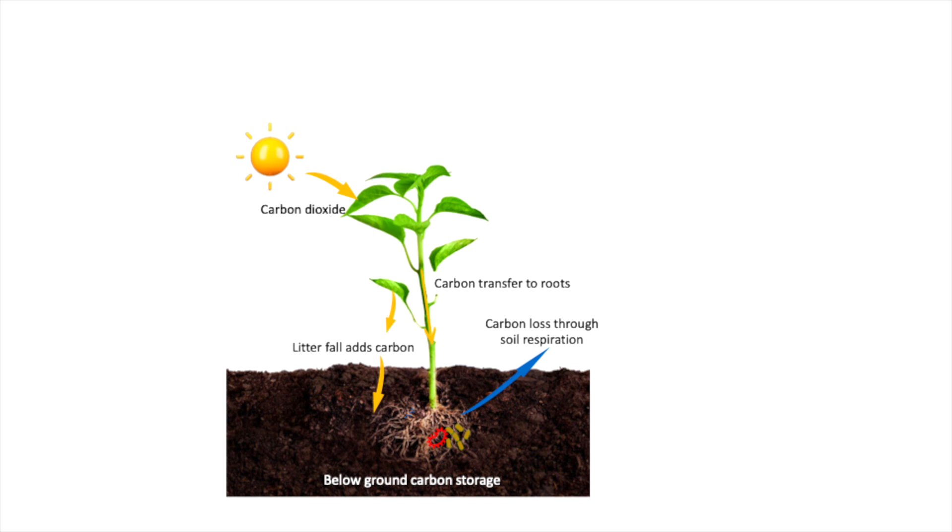During photosynthesis, light energy is captured by plants and used to convert carbon dioxide absorbed from the air and water from the soil to build carbohydrates, which act as a source of food for plant growth.